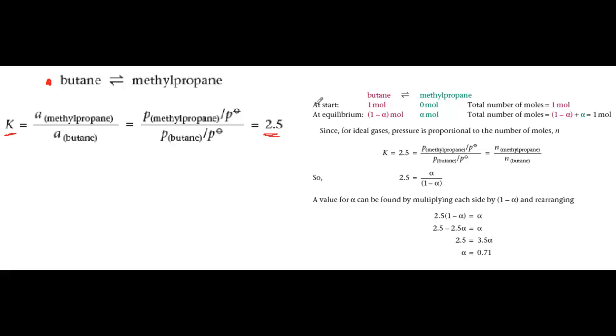In calculations like this, it's a good idea to draw up a little table underneath the chemical equation for the reaction and we'll use that table to show the amounts of reactant and product at the start and at equilibrium.